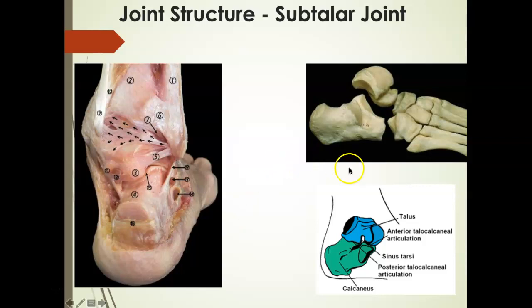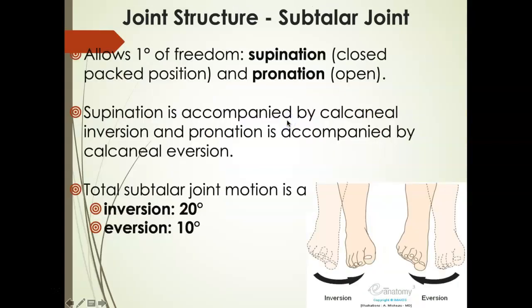Next is the subtalar joint. As the name implies, the subtalar joint represents the relationship between the talus and the calcaneus. In terms of degrees of freedom, it also allows for one degree of freedom, but in supination and pronation — that combination of movements. Supination is most often accompanied by calcaneal inversion, and pronation is accompanied by calcaneal eversion. Normative values for inversion are about 20 degrees of range of motion, and for eversion, about 10 degrees.